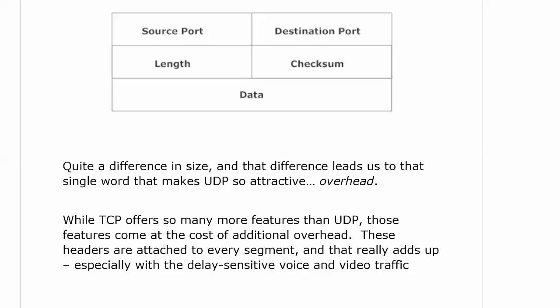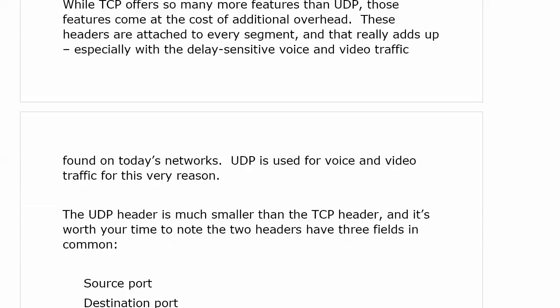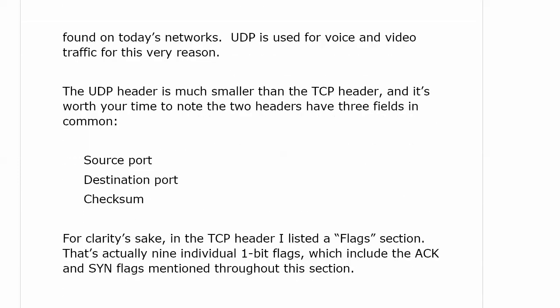Why don't we just send everything via TCP? Because it costs us more — not financially, but it costs us with a lot of extra overhead that starts to slow down our network, especially when it comes to voice and video traffic. Our end users have zero tolerance for anything botching that up, and TCP would just add a monster amount of overhead to that. That's why we use UDP for voice and video traffic.